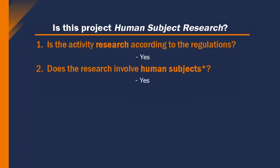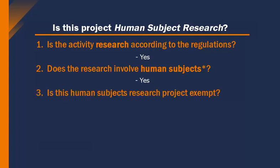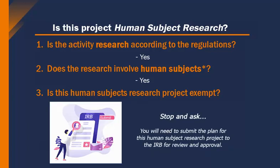Alternatively, if you've answered the first two questions yes and you know that you're working on a human subject research project, the next question is to determine if the human subject research project is exempt. At UVA, the institution has decided that the IRB should make this determination. So when you know your planned project is a human subject research study, stop and ask the IRB.